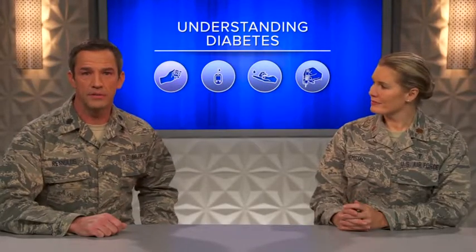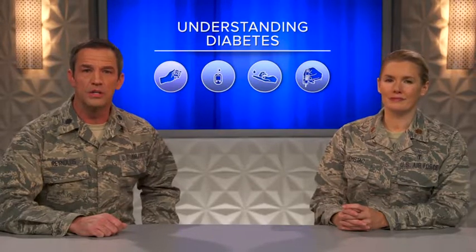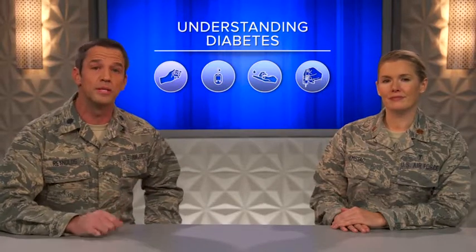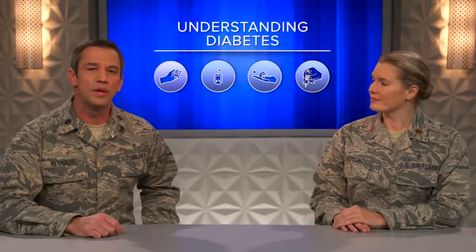Type 2 diabetes mellitus usually develops from a condition called insulin resistance, where the body's fat, muscle, and liver cells don't use insulin effectively to absorb glucose, a kind of sugar, from the bloodstream. The pancreas, where insulin is made, reacts by making even more insulin, but eventually the pancreas can no longer keep up with the body's demand.